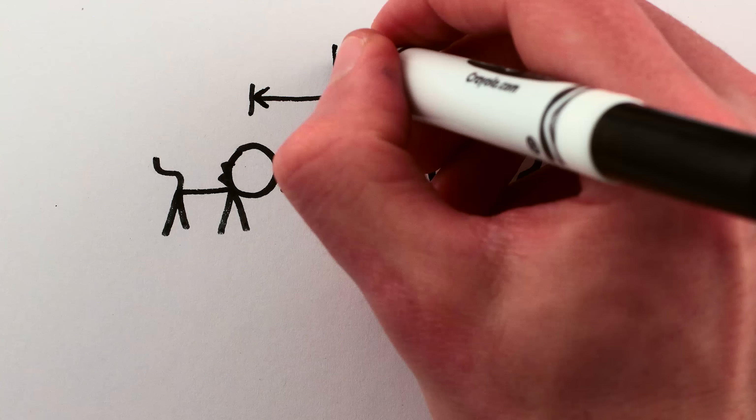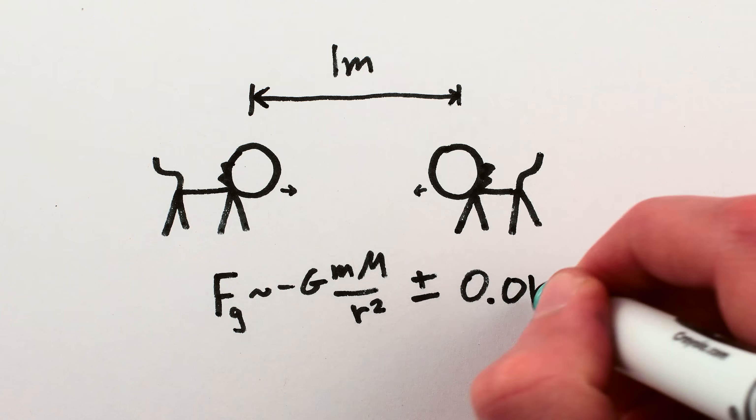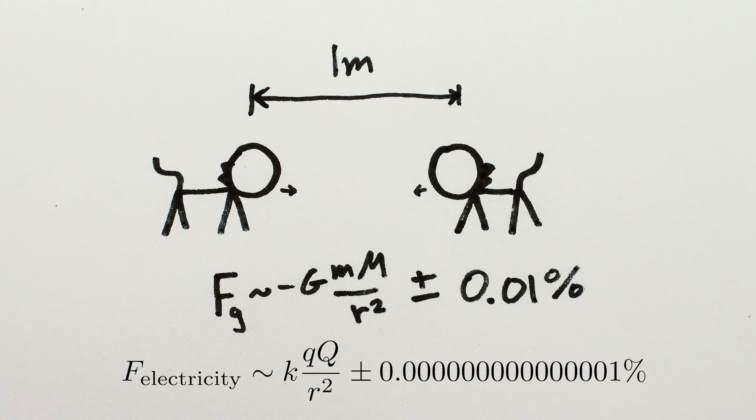And so far, for objects a meter apart, we've only confirmed that the gravitational attraction between them follows the Law of Universal Gravitation to within around one one-hundredth of a percent, which is a trillion times less precise than our knowledge of the equivalent law for electricity. And our grasp on gravity gets worse the smaller you go.